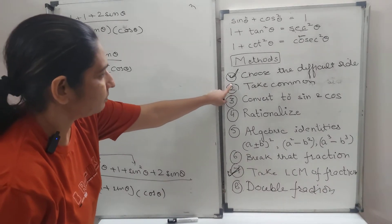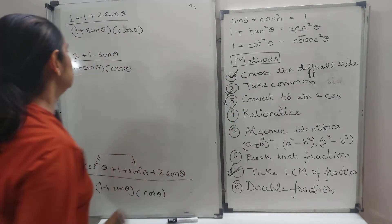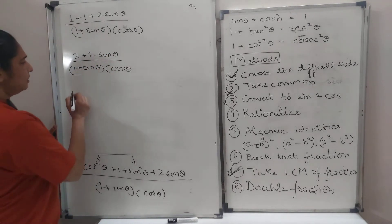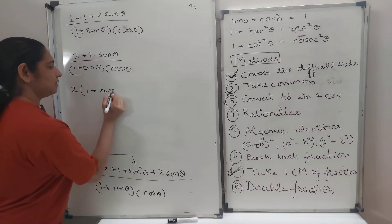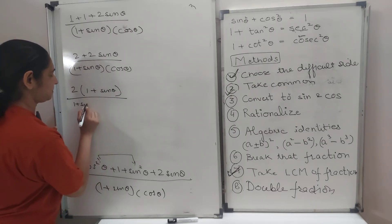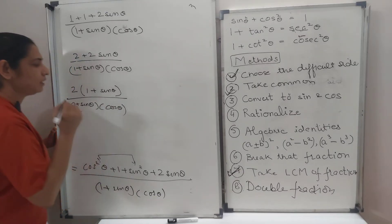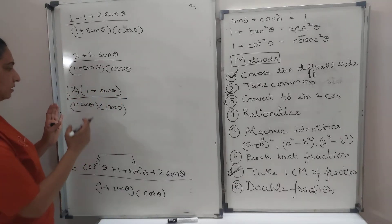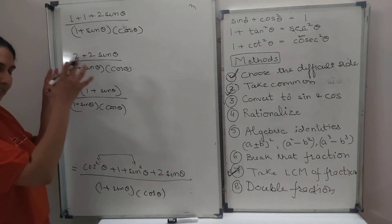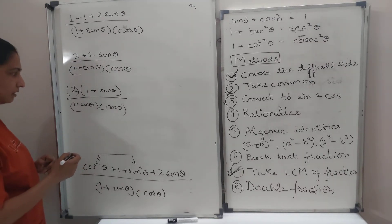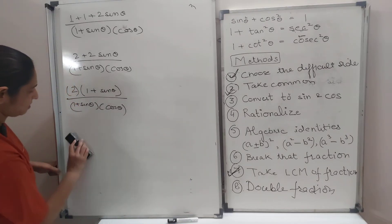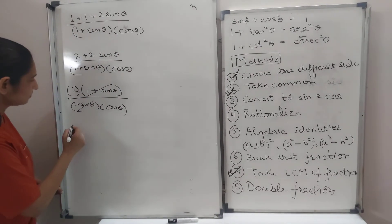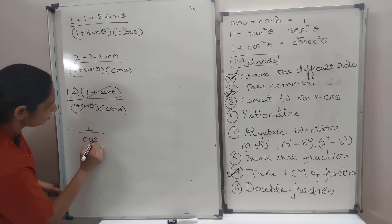See, now this thing will be useful. Taking out common. Taking out common means factorization. Two common comes. So, 2 common comes, 1 plus sin theta. Now notice, this is something multiplied by something. There are two factors here. There are two factors upper, factors niche. So, can we cancel something out? Yeah. We can cancel out this thing. So, what is left? We are left with only 2 upon cos theta.